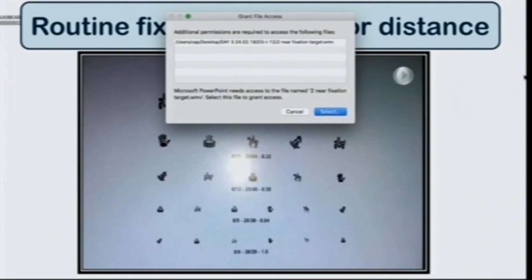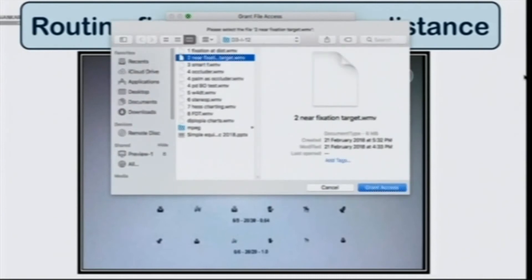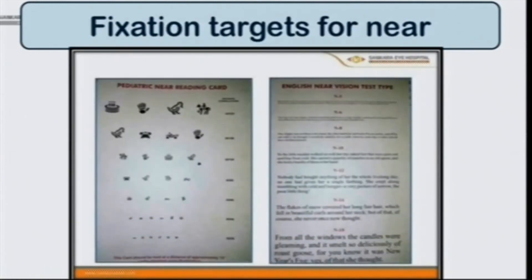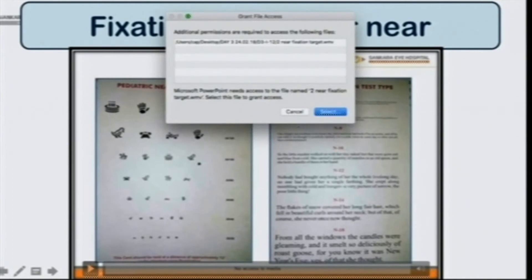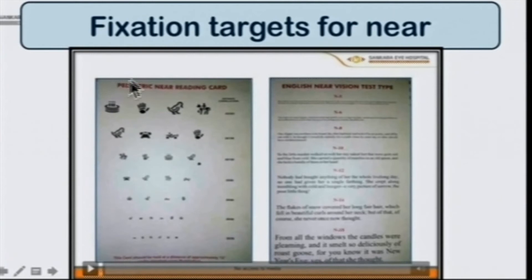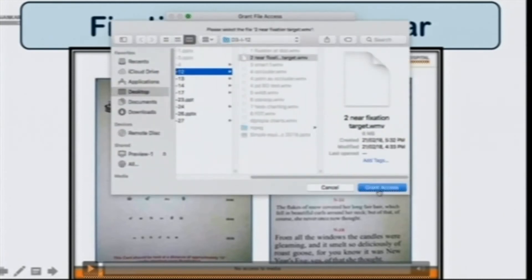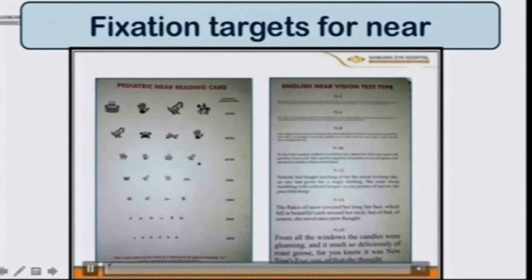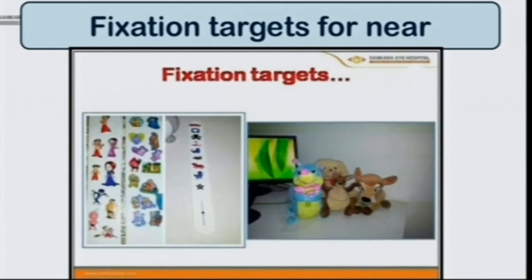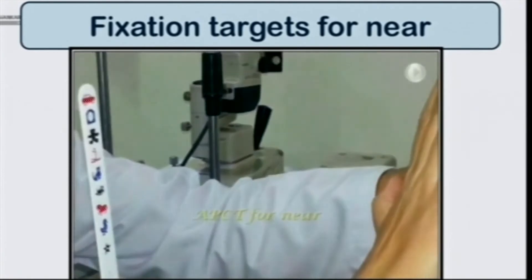Apart from fixation targets for distance, we would also need fixation targets for near. The fixation targets for near could be the near vision charts which are normally available. We also have the LANGS fixation stick, which is specially designed for this purpose. In children or infants, we could use toys as well.